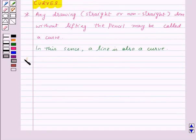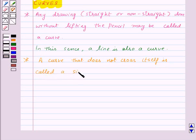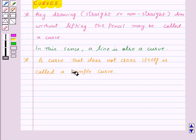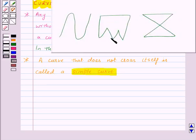Now, a curve that does not cross itself is called a simple curve. Here, first two curves are simple curves as they do not cross themselves, and this curve crosses itself at this point. So this is not simple.